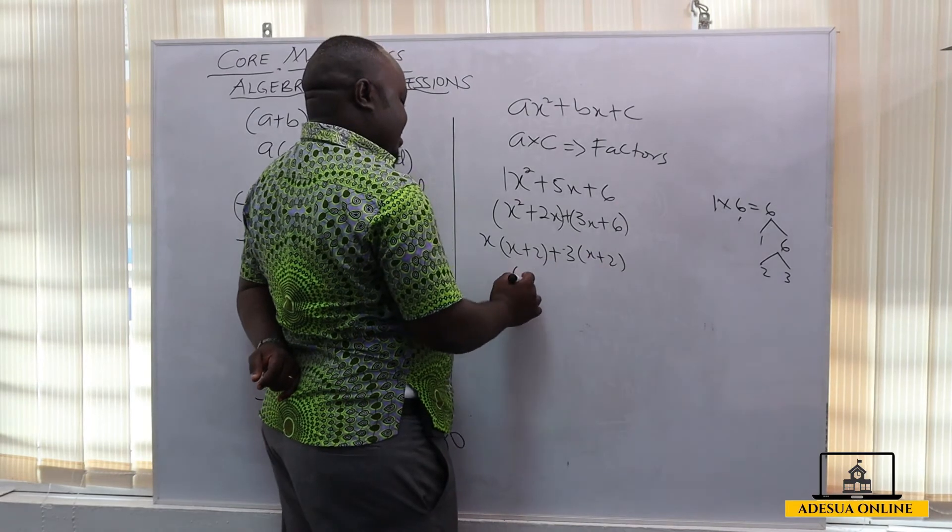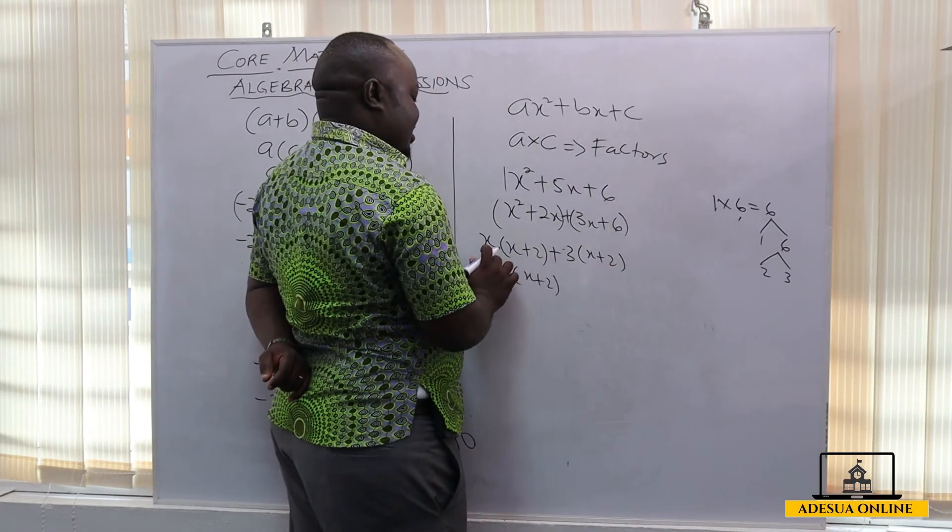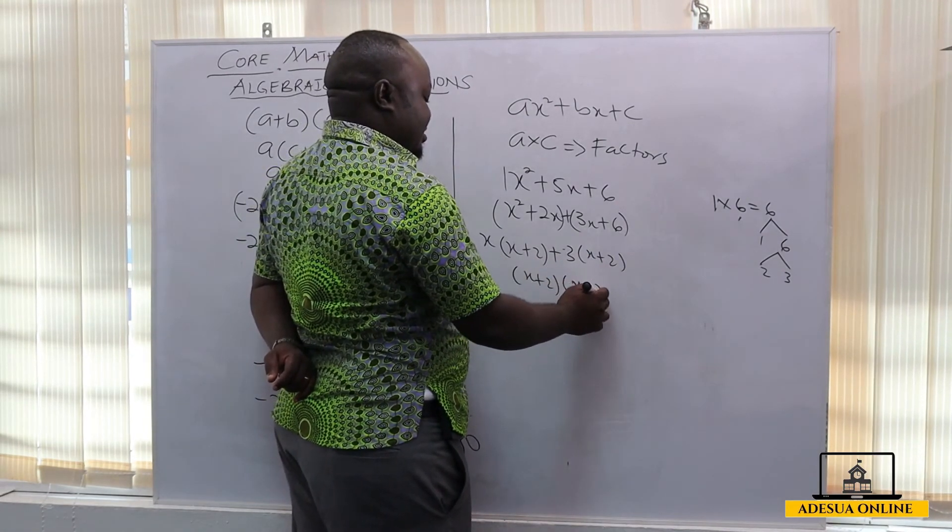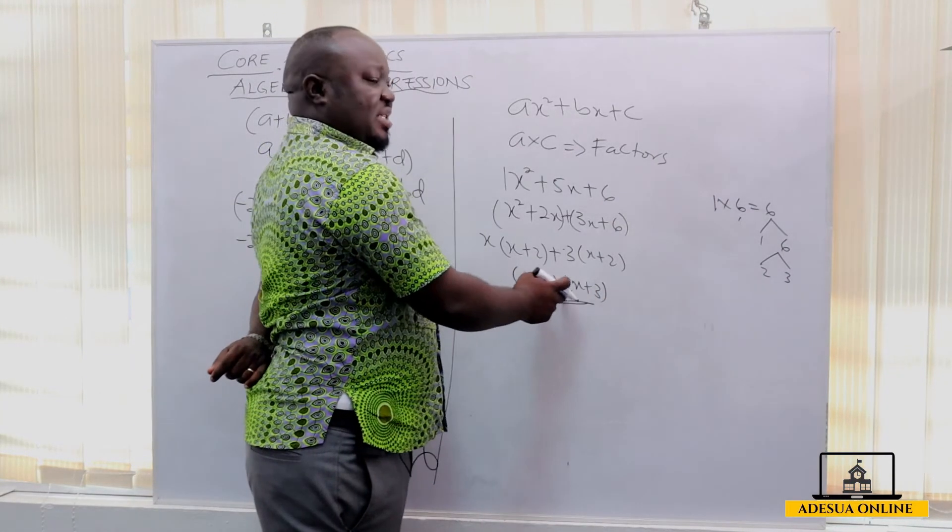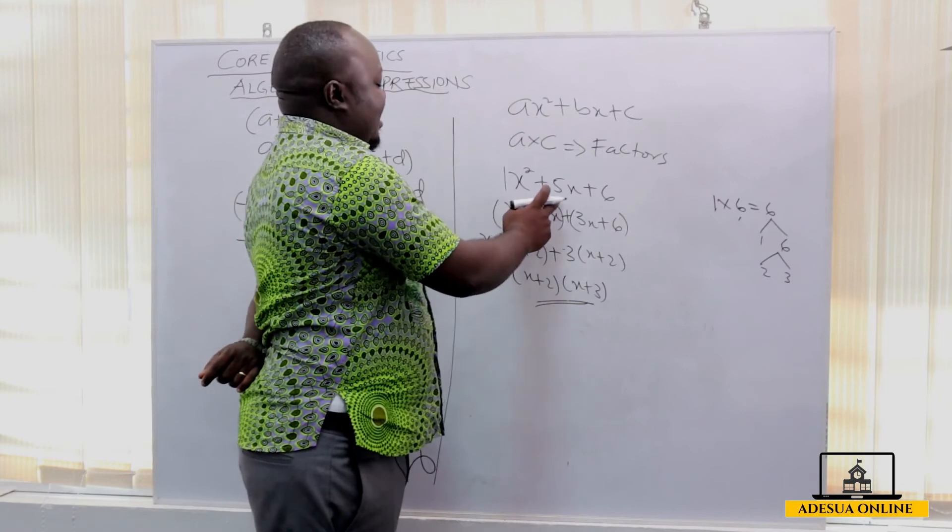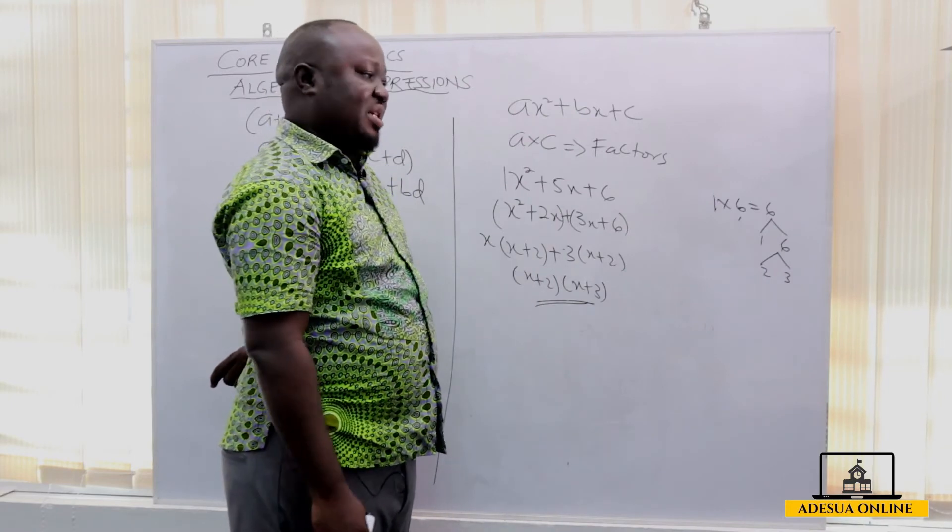Since this and this are the same, we have x plus 2 and then the second term is x plus 3. If we should expand this expression, we are going to get x squared plus 5x plus 6.